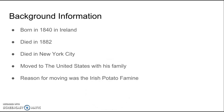Some background information on Timothy O'Sullivan: he was born in 1840 in Ireland and he died in 1882 in New York City. His family had moved there when he was younger, due to the Irish potato famine which was occurring during the 1840s, and this famine is what caused most of the immigration from Ireland to the United States.